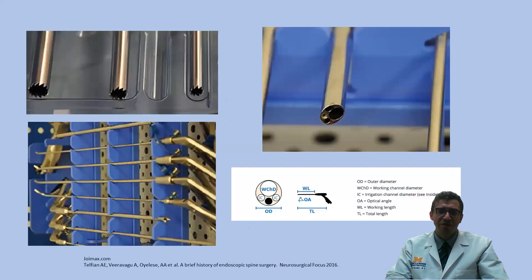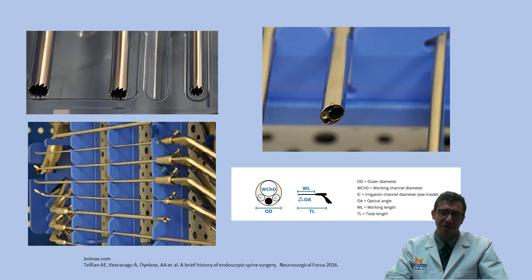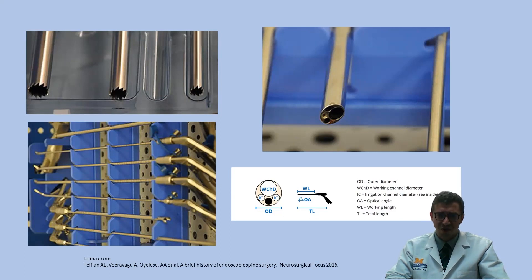The endoscope has a working channel where you can put in multiple types of instruments — kerosens, bronzers, and instruments very similar to what you use in minimally invasive, microscopic, and open procedures, just smaller to fit into the working channel. You have irrigation ports and a light source. Different companies have different sizes of working channels, but that's beyond the scope of this introductory presentation.